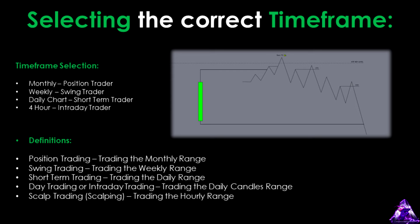Let's explore the different types of traders. The first is the position trader, who primarily focuses on the monthly range. This style is typically reserved for hedge funds and institutions with significant liquidity, and retail traders usually don't engage with it as setups can take years to materialise. The second type is the swing trader, who operates within the weekly range. For swing traders, setups generally take several weeks or even months to form, and this style tends to perform best during expansion phases on the monthly chart.